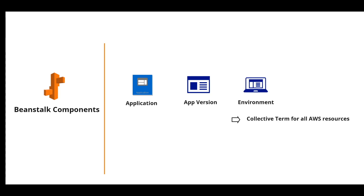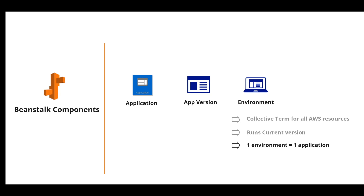An application version is part of an application, and an application can have many application versions — each application version is unique. Next is Environment. An environment is where you place or launch your application, and it's the heart of the application. When you launch your application in Beanstalk, AWS starts assigning resources like EC2, Auto Scaling Groups, Load Balancers, and Security Groups to your application. In an environment, only the current version of the application runs, but one application version can only run in one environment, while the same version can be deployed across multiple environments.